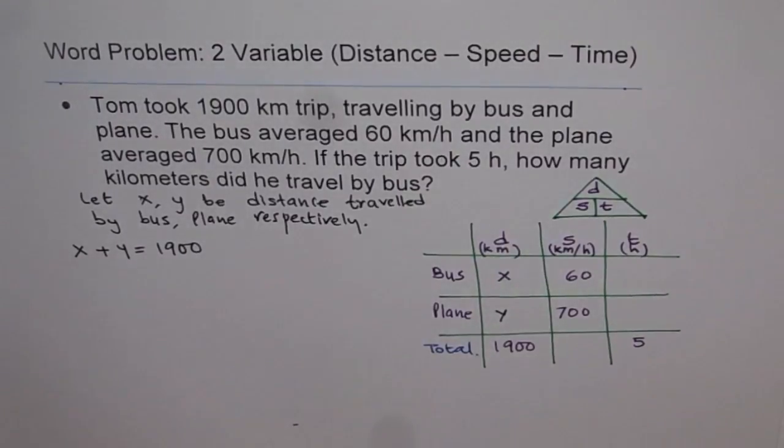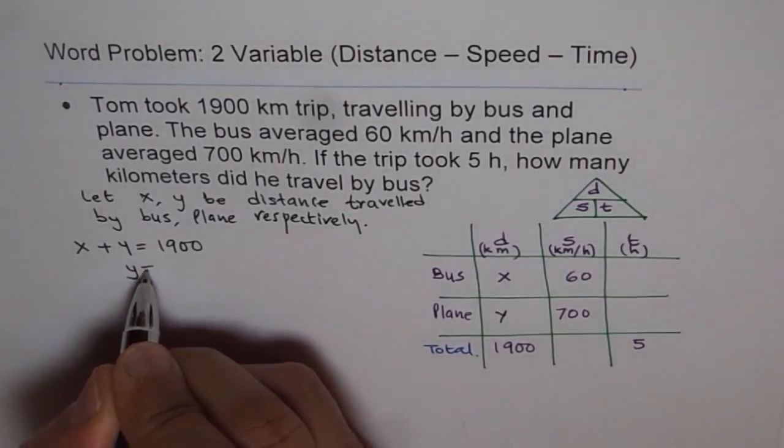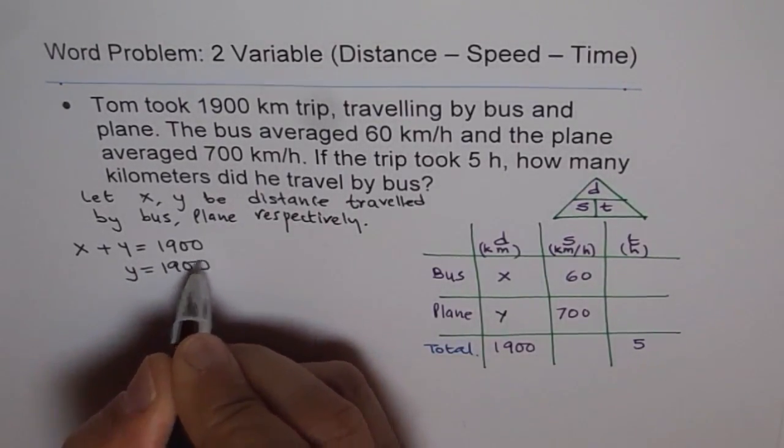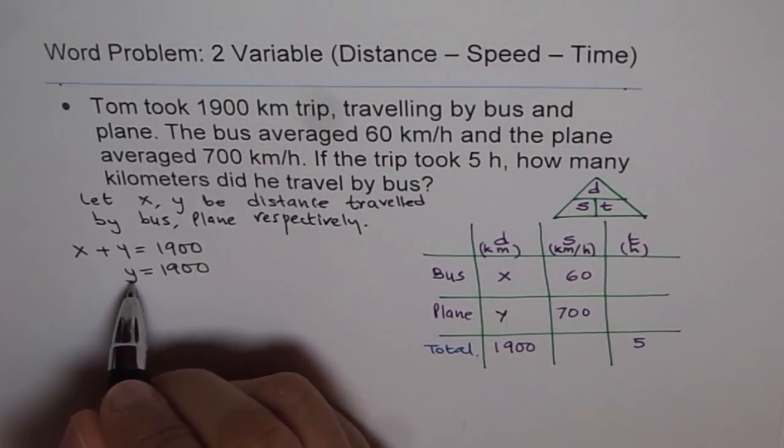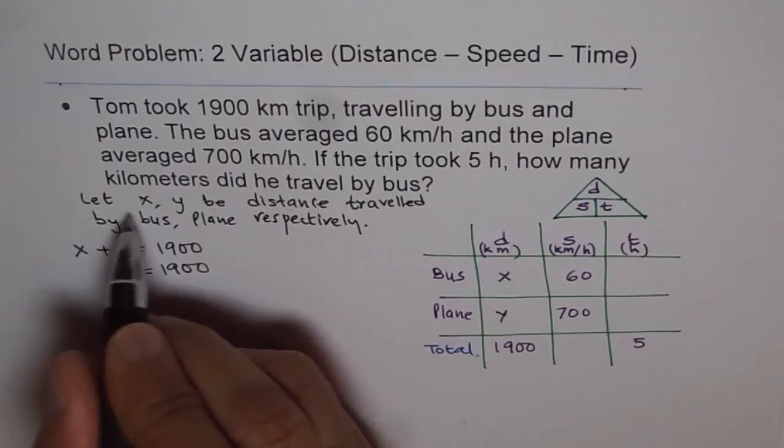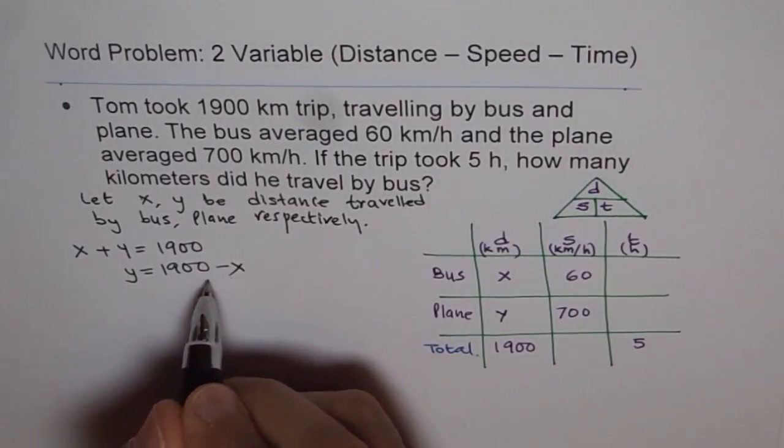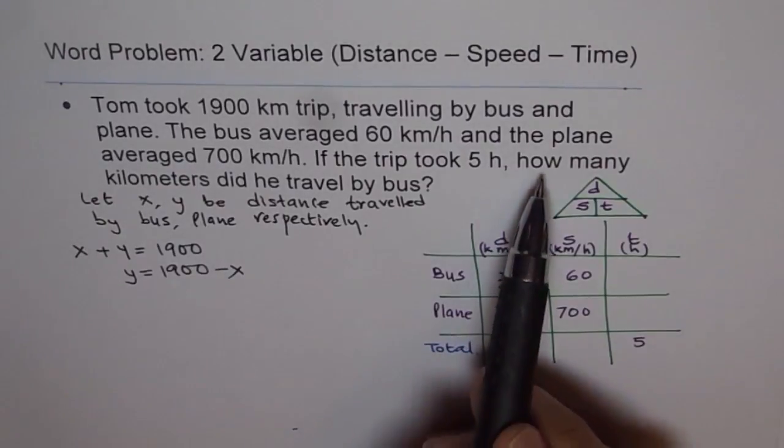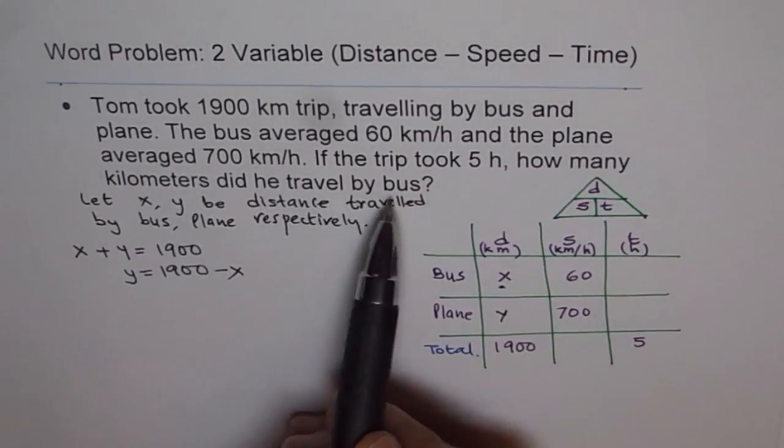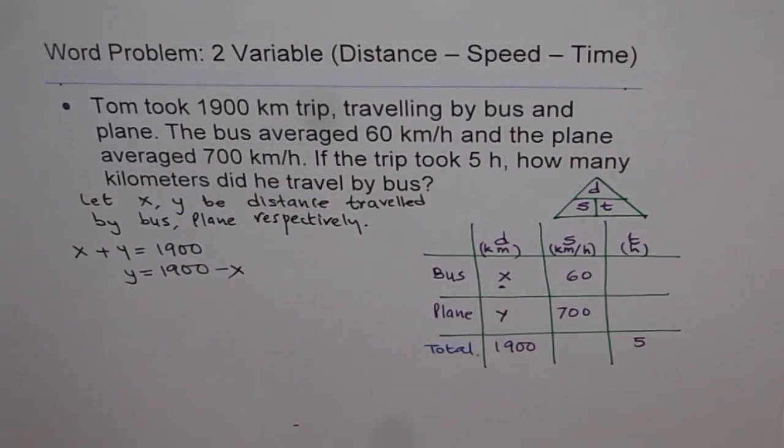When we have two variables, it is a good idea to write one in terms of another. So we can write from here Y equals 1900 minus X. Since we want X to be there, this is what we want to know: how many kilometers did he travel by bus? So we will get equation in X, solve for it and get our answer.